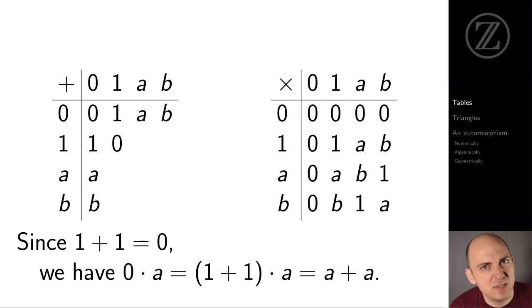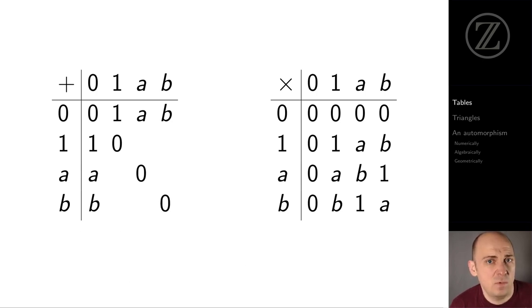Some distributivity helps us at this point. 1 plus 1 is 0. So multiplying that by A, we find that A plus A is 0 as well. Same thing works for B. 1 plus 1 is 0, so multiplying by B, we find that B plus B is 0. Now we can fill in even more of the addition table, thinking like we're playing Sudoku again.